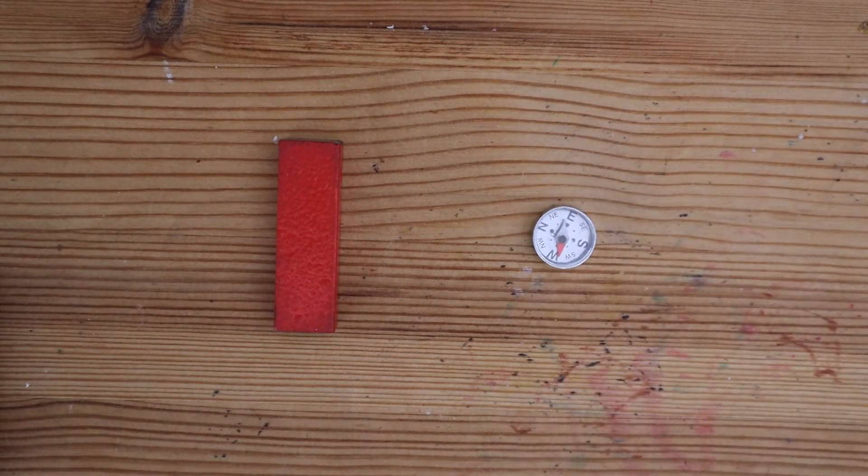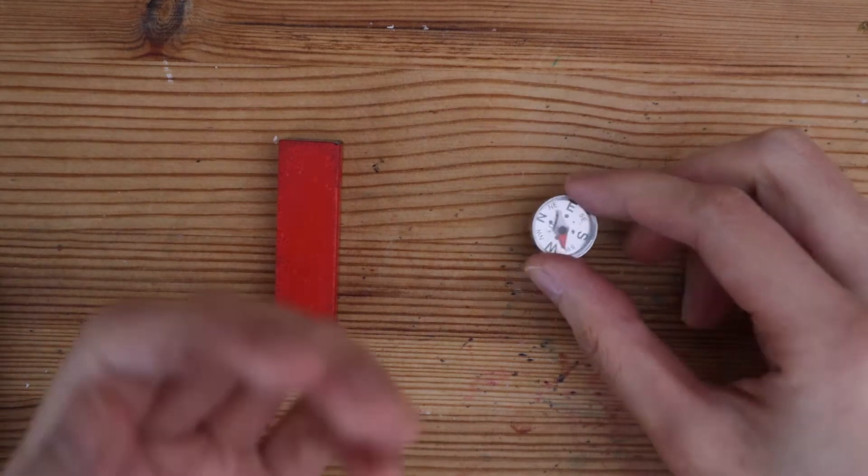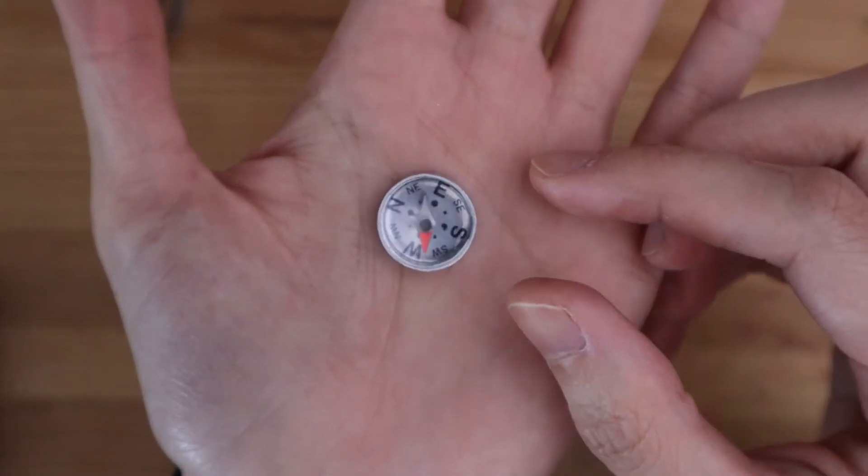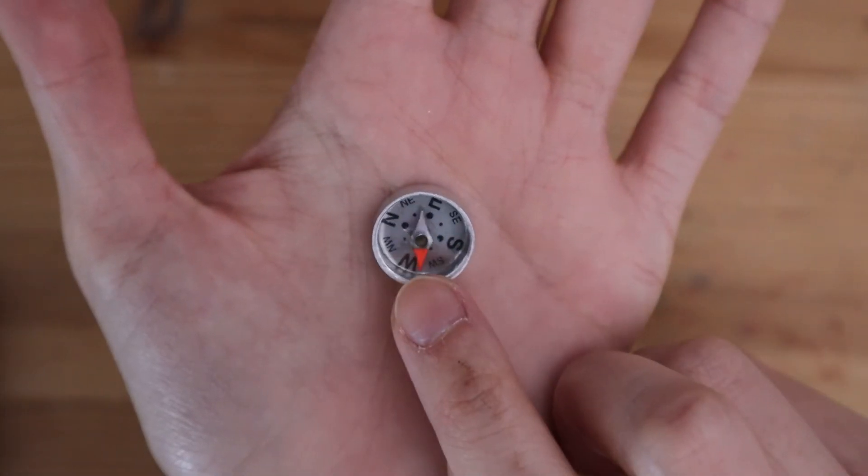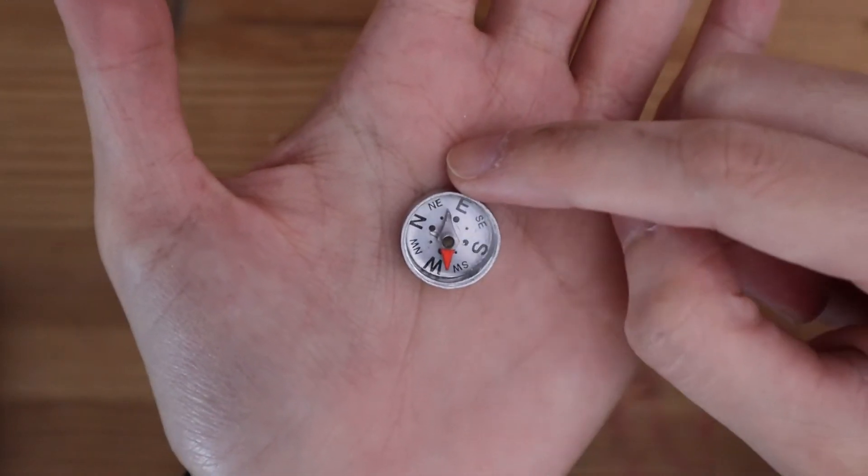If you have a permanent magnet but you don't know which end is north and which is south, you can figure it out using a compass. A compass is kind of like a mini permanent magnet. The red end of the needle is north and the other end is south.